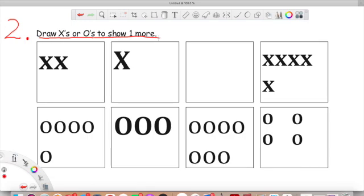That's very interesting. So in our first box, I see one, two X's. I'm going to draw one more X to show one more. So I drew one more X. In the next box, we're going to do the same thing. We're going to see, I see one X. I'm going to draw one more X to show one more. So you're going to look in each of these boxes. And each time you're going to look at the X or the O and you just need to draw one more.